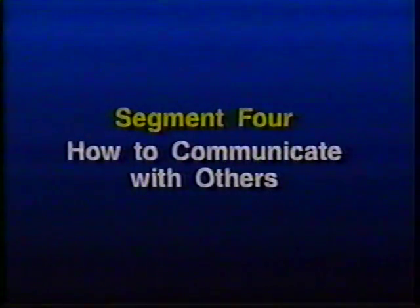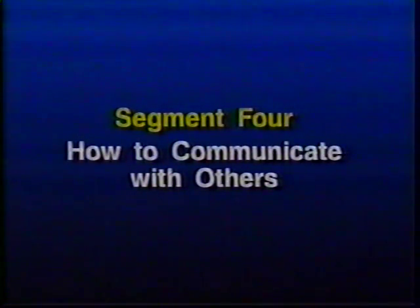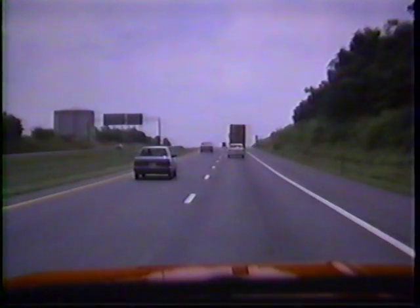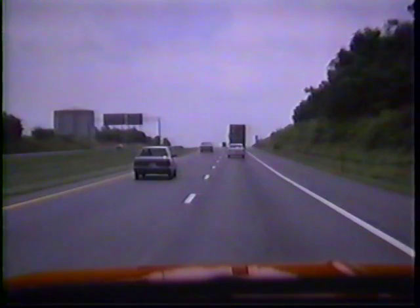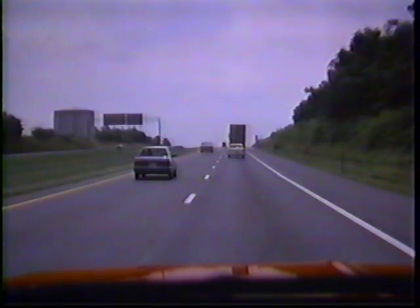Segment four: How to communicate with others. This last segment concerns how you communicate with others through the use of your vehicle's horn, signal lights, and hand signals. When a car in the right lane appears likely to change lanes to get by a truck, if you're intending to pass, make sure the driver sees you — a light tap on the horn lets him know you're there without shaking him up. That's what a horn is for: to let people know where you are, not to tell people to get out of your way.